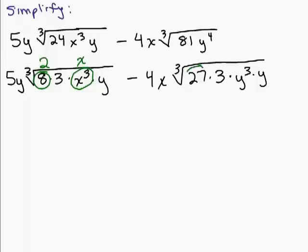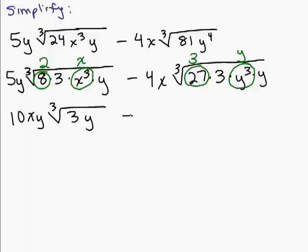So we want to rewrite that as y cubed times y. So my perfect cubes over here are the cube root of 27, which is 3, and the cube root of y cubed is y. So whatever we pull out gets multiplied by anything in the front. So I have 5y times 2 times x. That will give me a 10xy and what's left inside is just a 3y. For my next term, I have 4x times 3 times y. So that's 4 times 3 is 12xy. And what's left inside is a 3y.